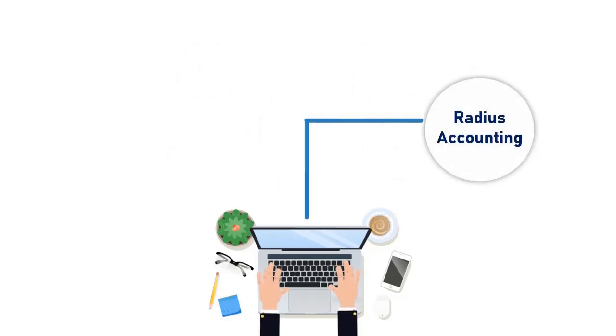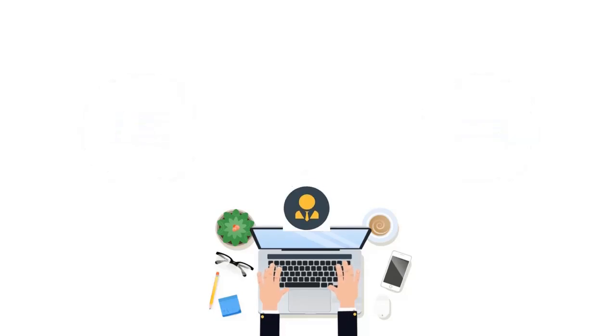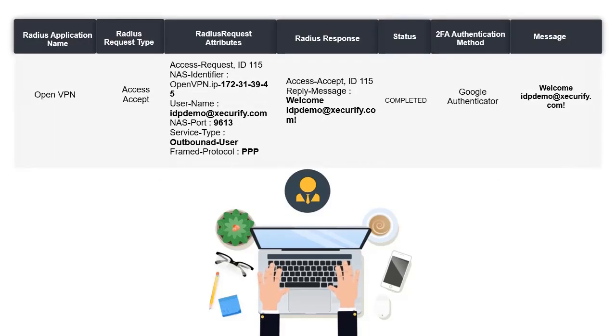Additional features like Radius accounting and Radius auditing are also included in the Mini Orange feature stack. This allows the administrator to keep track of the Juniper usage of the users and all of their login events.